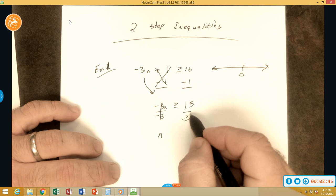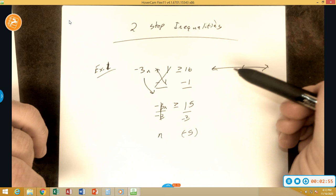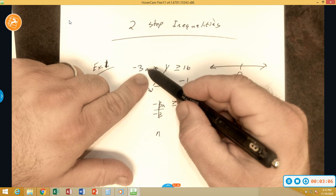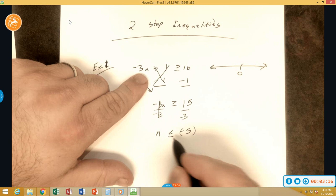So the question is, do we need to flip the inequality? We answer that by asking the other question: is the number attached to the variable negative? Looking up here, is the number attached to the variable negative? The answer is yes it is. So yes, we need to flip this from a greater than to a less than, and of course we keep the equal to part of it as well.